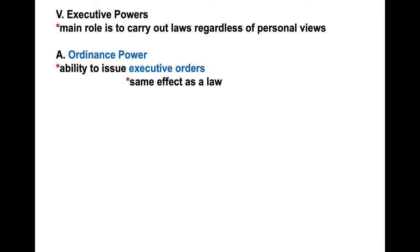One example of executive power is the ordinance power — the president's ability to issue executive orders. An executive order is essentially a directive that has a similar effect as a law, but it's not a law because it doesn't get passed by Congress. Going way back to World War II, FDR issued an executive order to have all Japanese Americans living on the West Coast interned in war camps in the central part of the United States because it was considered a military threat. Right now you see state governors — like Governor Burgum in our case — issuing executive orders to close non-essential businesses.